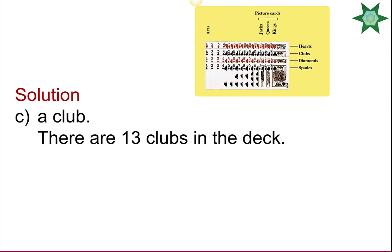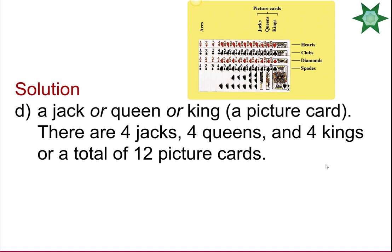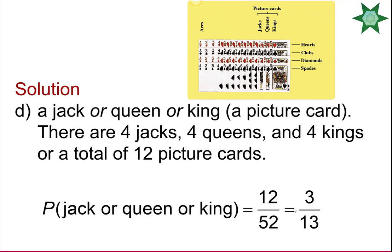The probability of getting a club is 13 over 52, or 1/4. We can also note there are four suits equally likely, so the probability of any one suit is 1 out of 4. The probability of getting a picture card: there are 3 picture cards per suit times 4 suits, giving 12 picture cards total, so the probability is 12 out of 52, or 3 over 13.